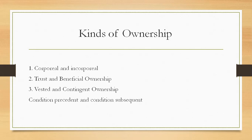After this, we get to trust and beneficial ownership. Trust ownership is what you read in the law of trusts. This is an instance of duplicate ownership — trust property is owned by two persons at the same time. The relation between the two owners is such that one is under obligation to use his ownership for the benefit of the other. The former is called the trustee and his ownership is trust ownership; the latter is called the beneficiary and his ownership is called beneficial ownership.